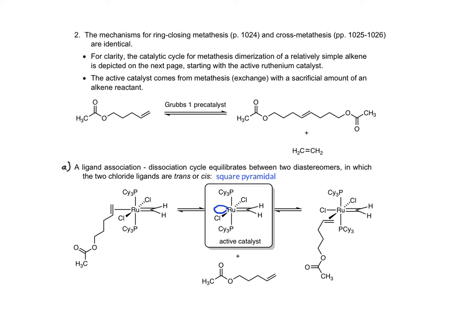The probability of alkene collision with ruthenium is much higher on the open site trans to the carbene ligand. The lower probability pathway involves an alkene colliding with ruthenium so that a ruthenium chloride bond occupies the open site.